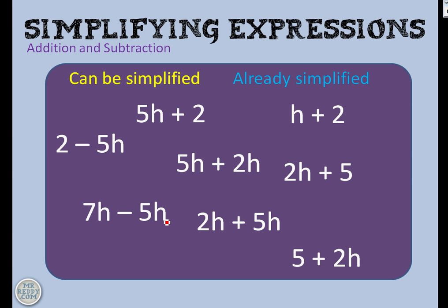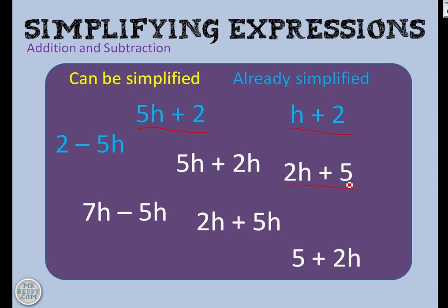Here's a few expressions — some of them can be simplified, some of them can't, and some have already been simplified as far as they'll go. 5h plus 2 is one that cannot be simplified further — it already has been simplified. Similarly, h plus 2 can't be simplified; it's already been simplified. We've also got some h's then a constant — we can't simplify it. And another one with h's and a constant — it cannot be simplified either. Those are already as far as they'll go.